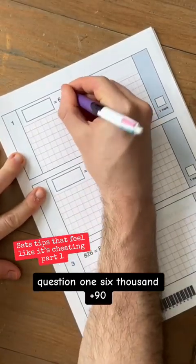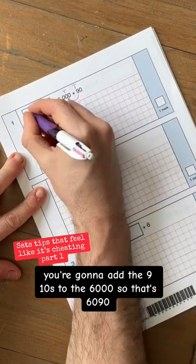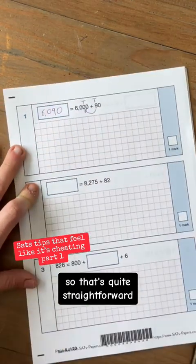Question one, 6,000 plus 90, you're going to add the 9 tens to the 6,000. So that's 6,090. So that's quite straightforward.